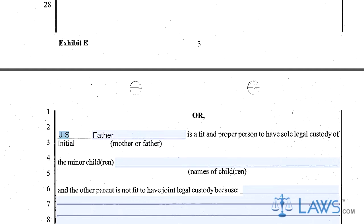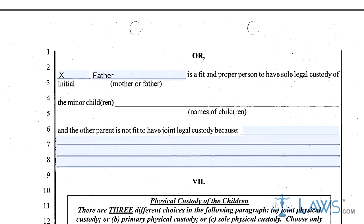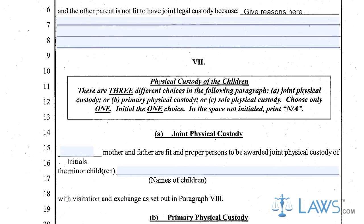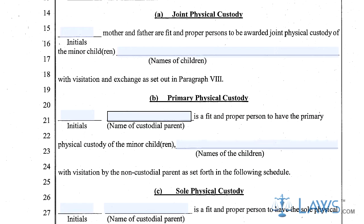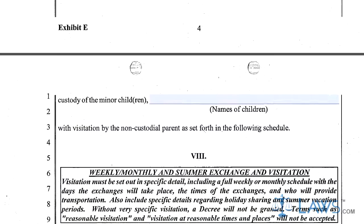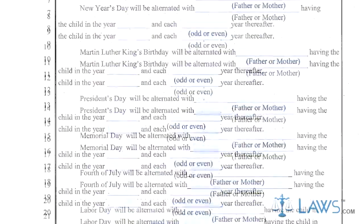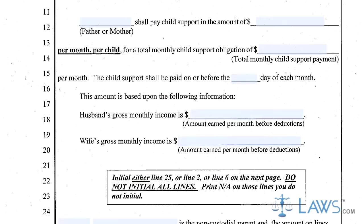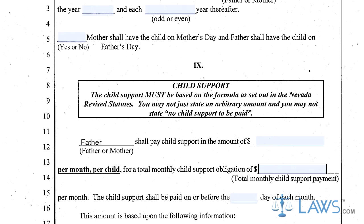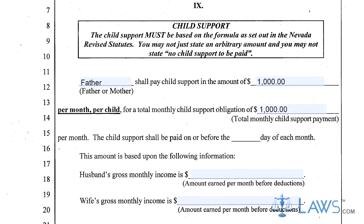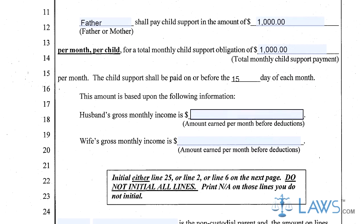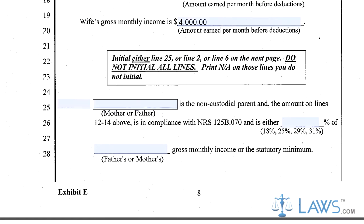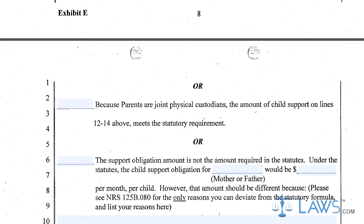Step 5: In Sections 6 through 8, indicate your wishes regarding physical and legal custody as well as visitation rights. In Section 9, enter the child support payments required. Determine these using the formulas listed in the Nevada Revised Statutes. In Section 10, list any health insurance coverage the children currently have.